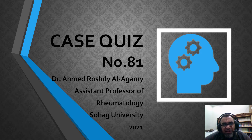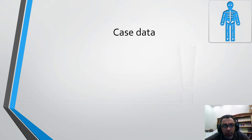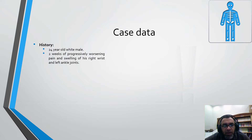Assalamualaikum warahmatullahi wabarakatuh. Today we will have case quiz number 81. A 24-year-old male presenting with a two-week history of progressive worsening pain and swelling of his right wrist and left ankle joints.